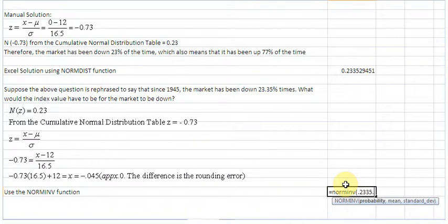We need to give it the mean, 12. Then we need to supply the standard deviation, 16.5. We close the bracket, and hit enter.